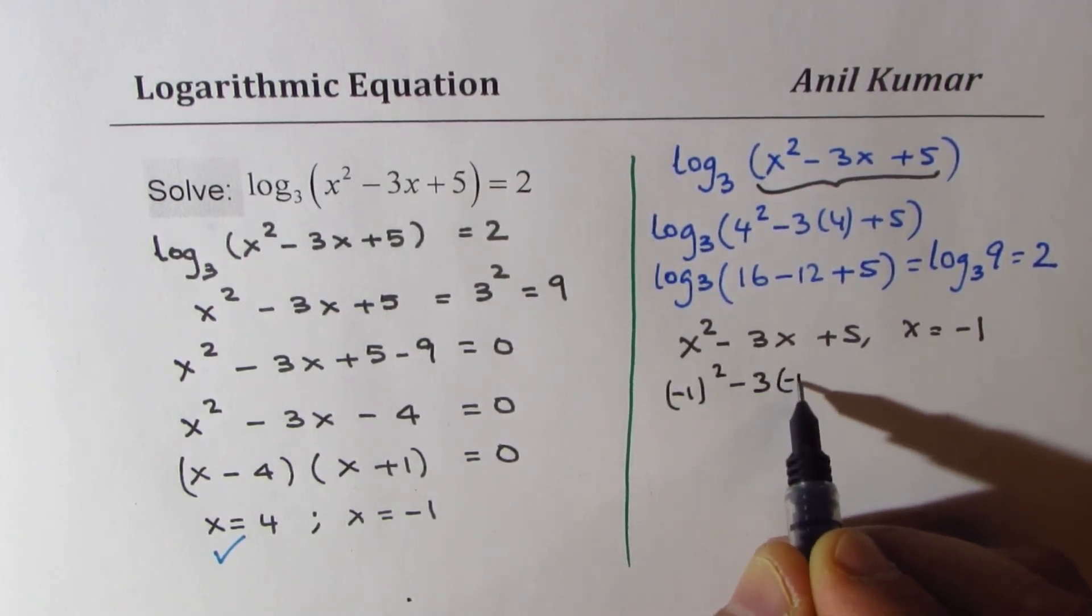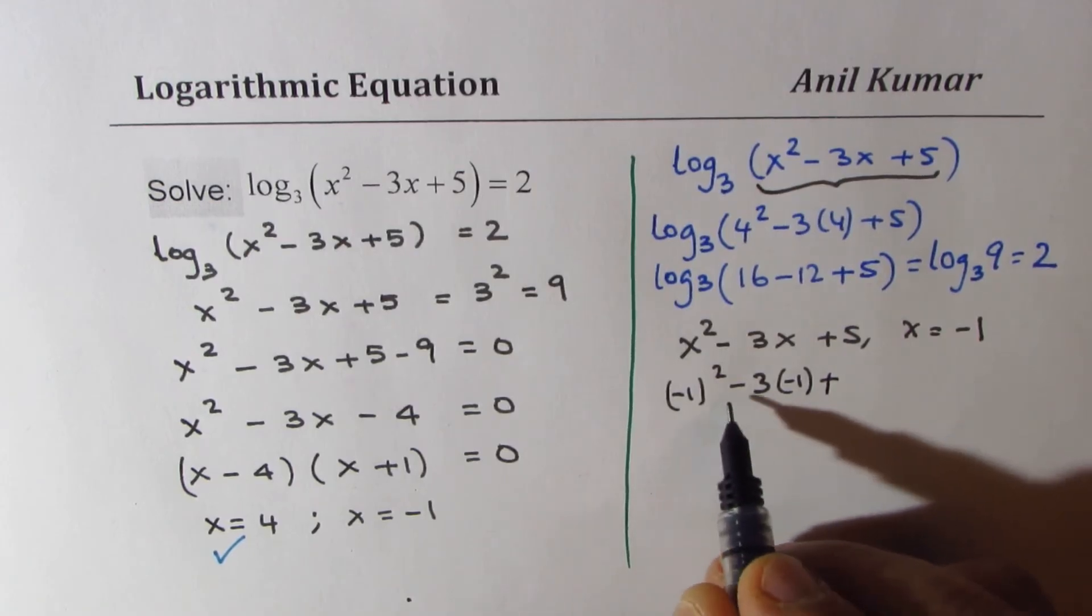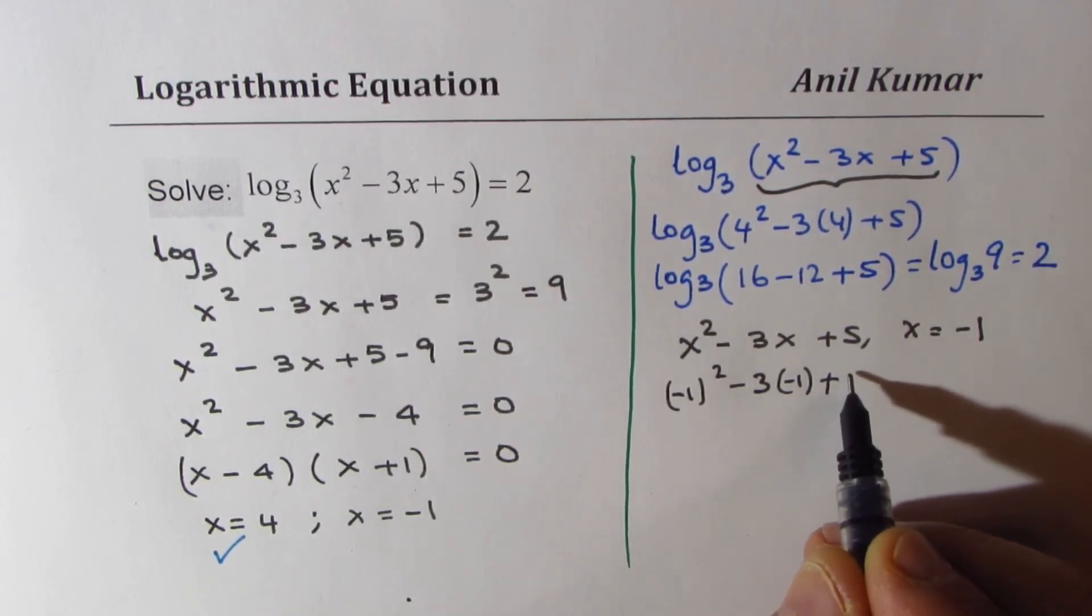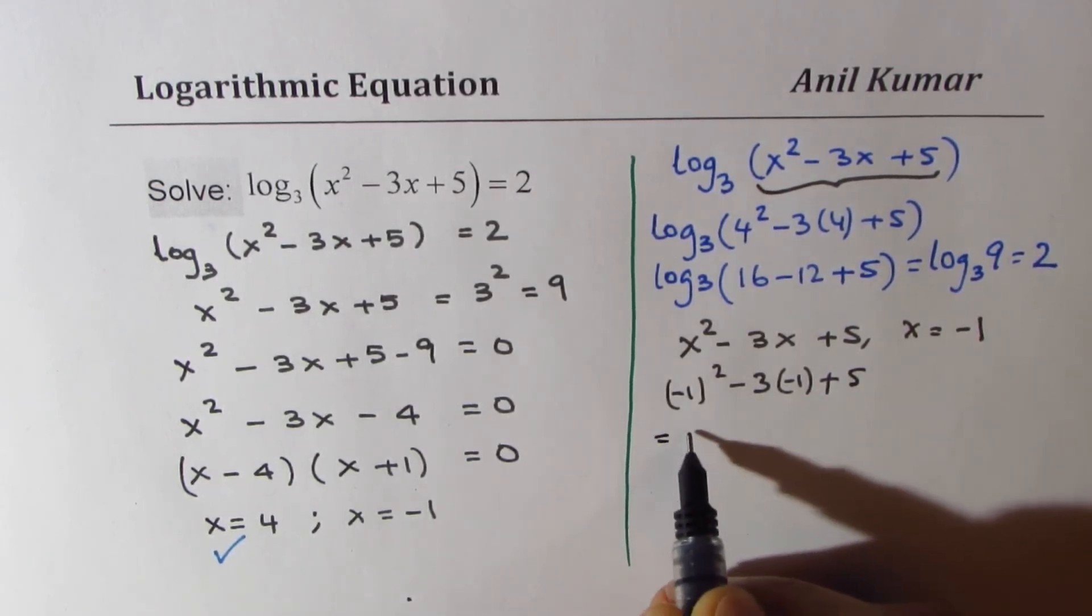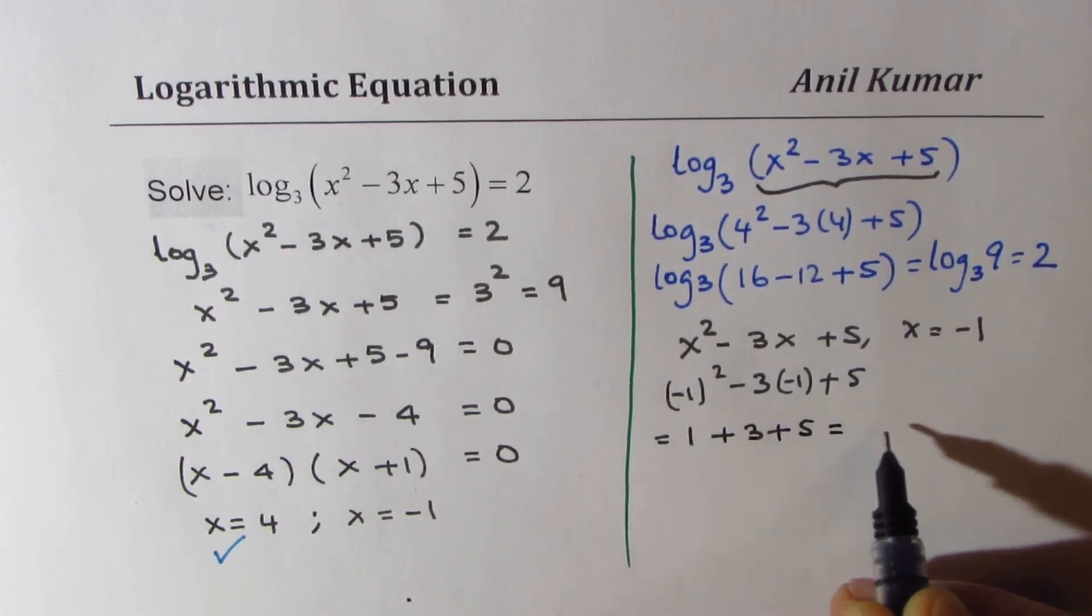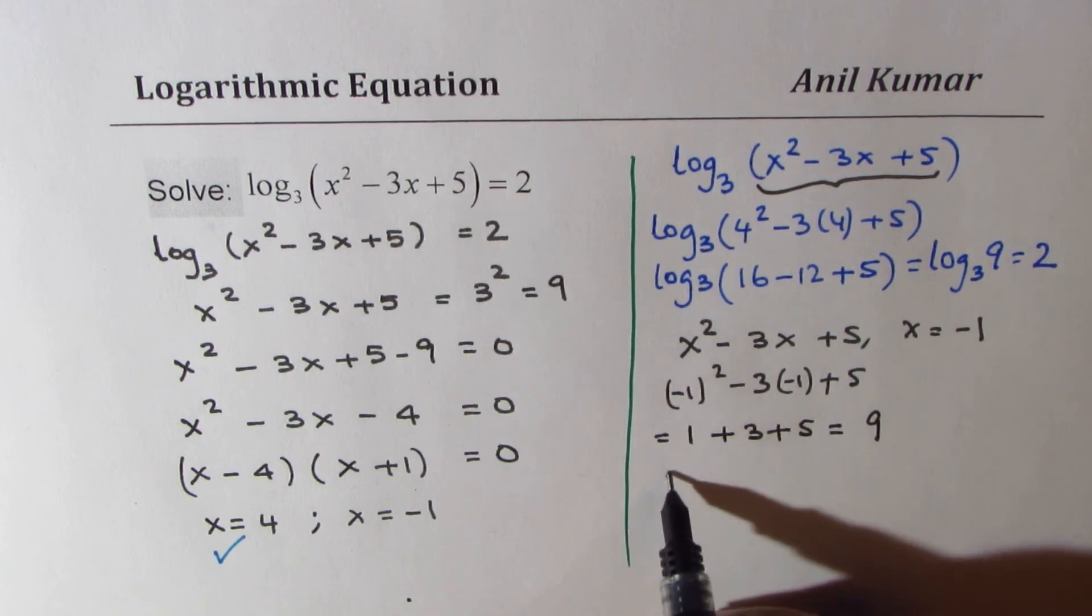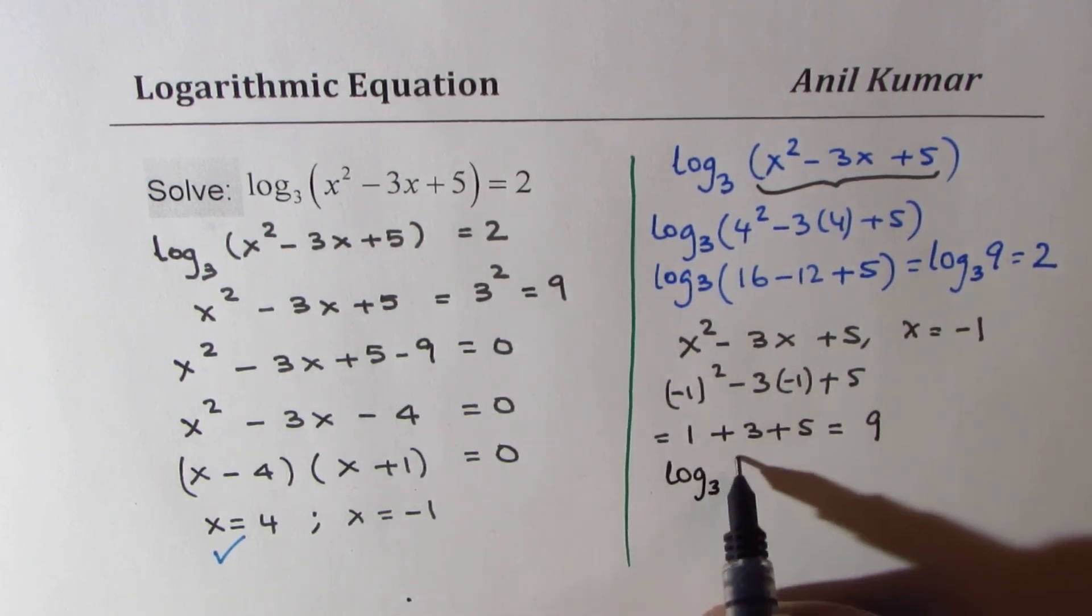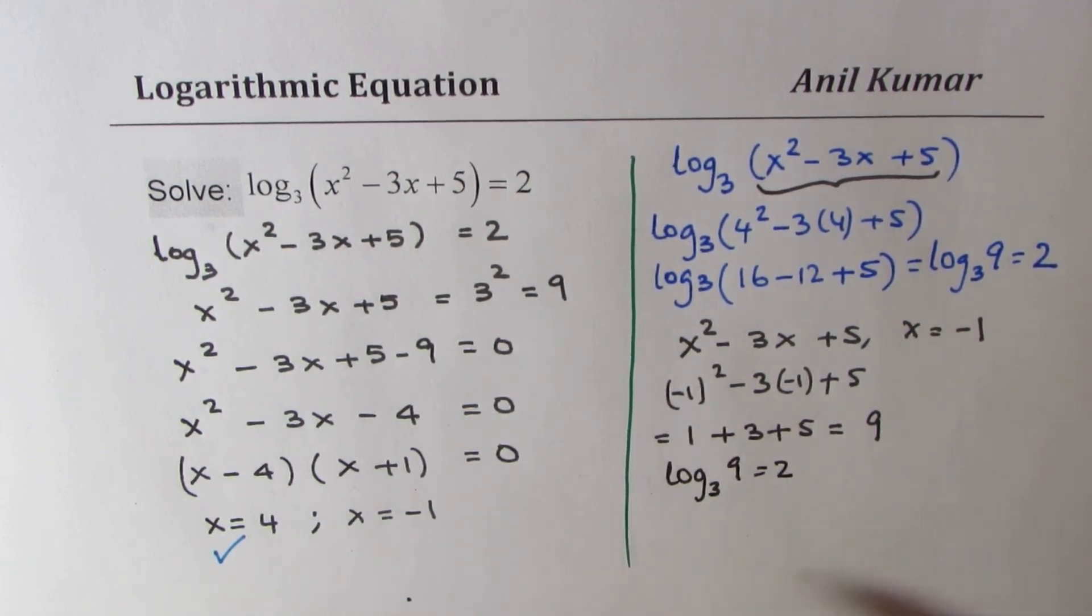If I substitute -1 here I get (-1)² - 3(-1) + 5 and that is 1 + 3 + 5 which is also equal to 9. So that will give us log₃(9) = 2, so this value here also works.